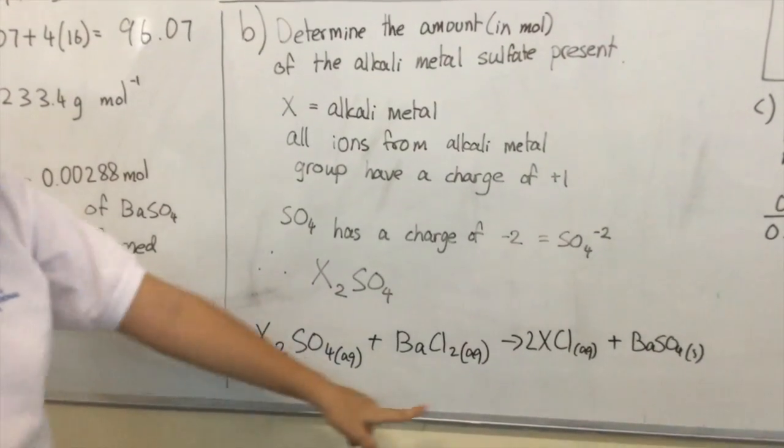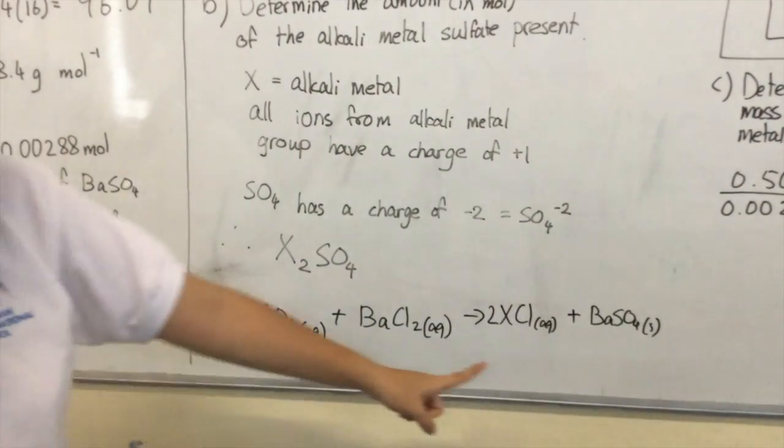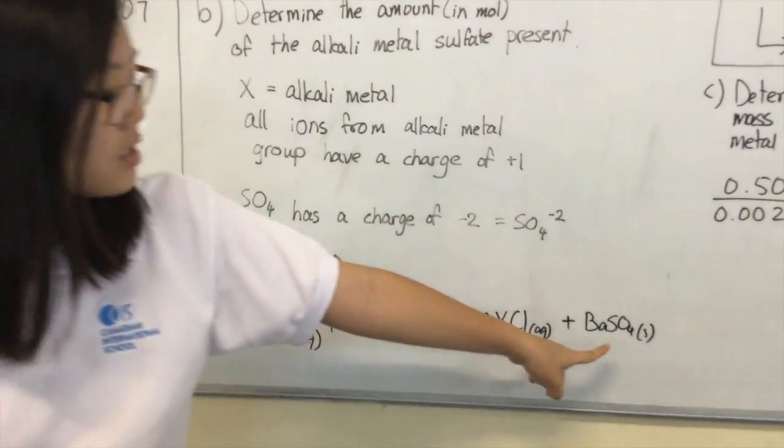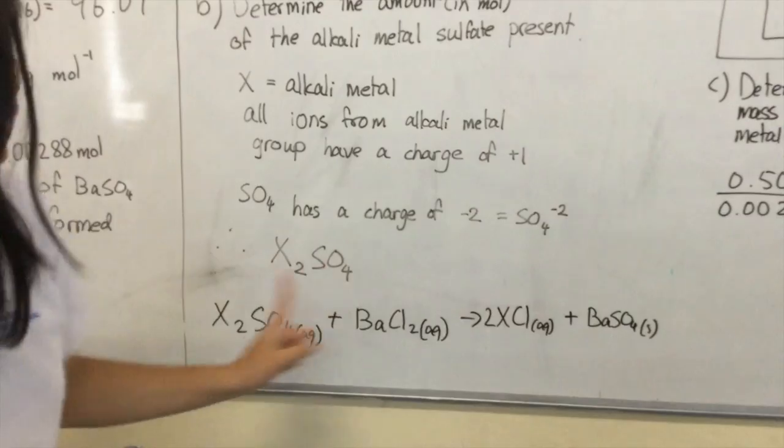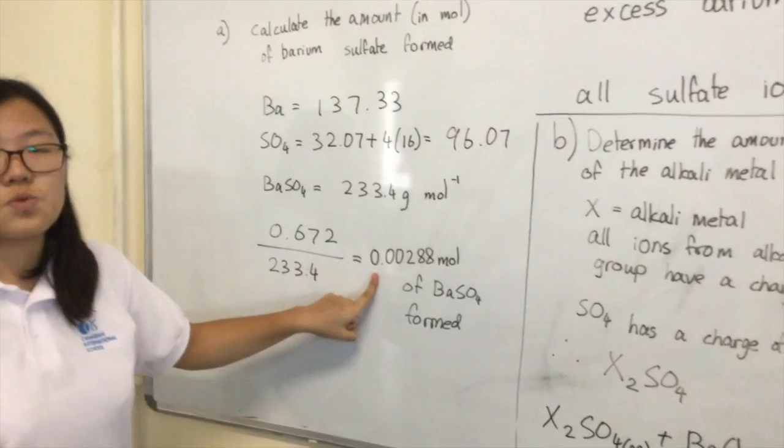This is the equation. If you see the ratio on the left-hand side and the right-hand side is 1 to 1. Sulfate there and sulfate here, so it's 1 to 1. So the mole is the same as the answer in the first question.